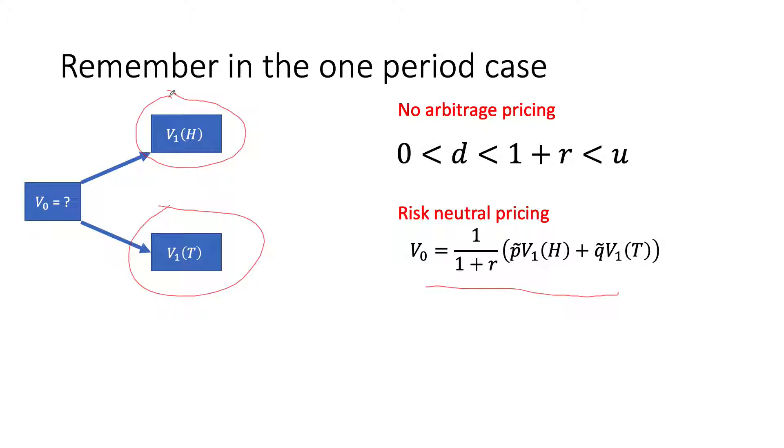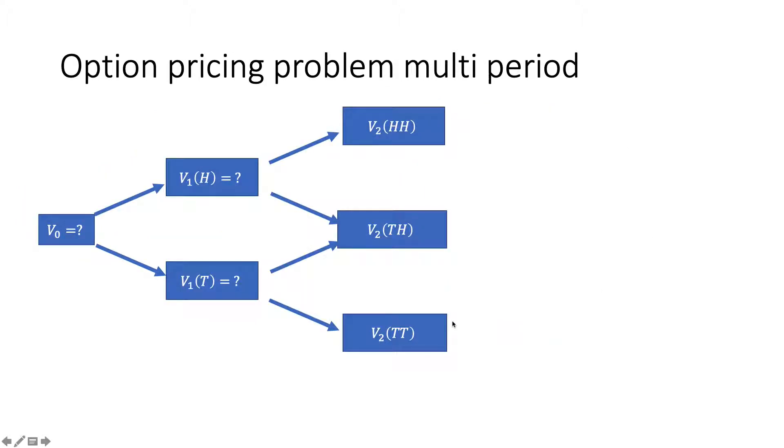That's all what this risk-neutral pricing is saying, and I showed how to derive this. We know how to find P and Q. These are just a function of things that we all know. We know the interest rate, we know the down factor, and we know the up factor. So we know everything that we need to know to make this happen. This is going to be very helpful when trying to solve the multi-period derivative pricing. So I put the formula here below so we can keep reminding it.